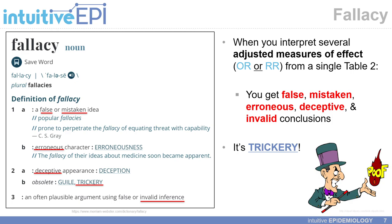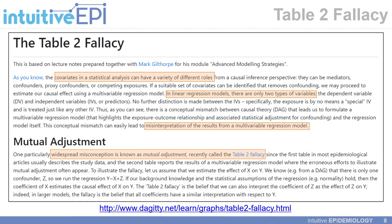In my view, it is trickery. In addition to the Westerreich and Greenland Table 2 fallacy paper, I also find this write-up on the Dagitty website quite useful. Dagitty is a website that allows you to create conceptual frameworks, or more specifically directed acyclic graphs, which you can then use to inform your epidemiologic study.